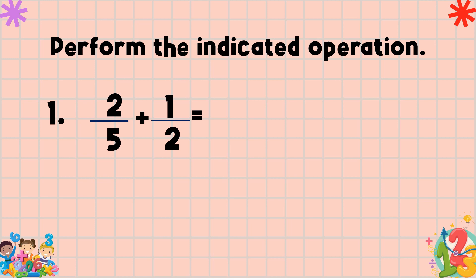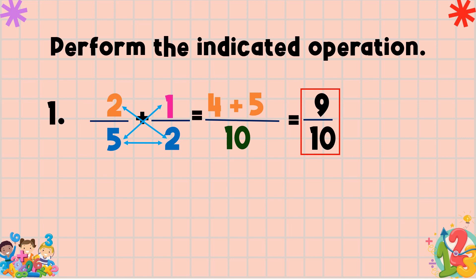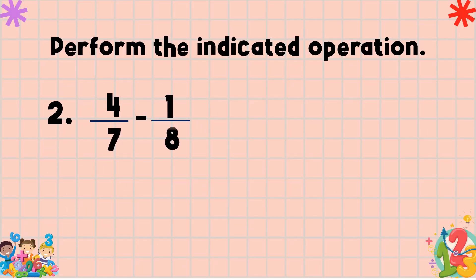For example: two fifths plus one half using the cross product method. Multiply the numerator of the first fraction by the denominator of the second — two times two equals four. Copy the indicated operation. Then multiply the denominator of the first fraction by the numerator of the second — five times one equals five. Multiply the denominators — five times two equals ten. Perform the operation: four plus five equals nine. Copy the denominator, ten. Therefore two fifths plus one half equals nine tenths.